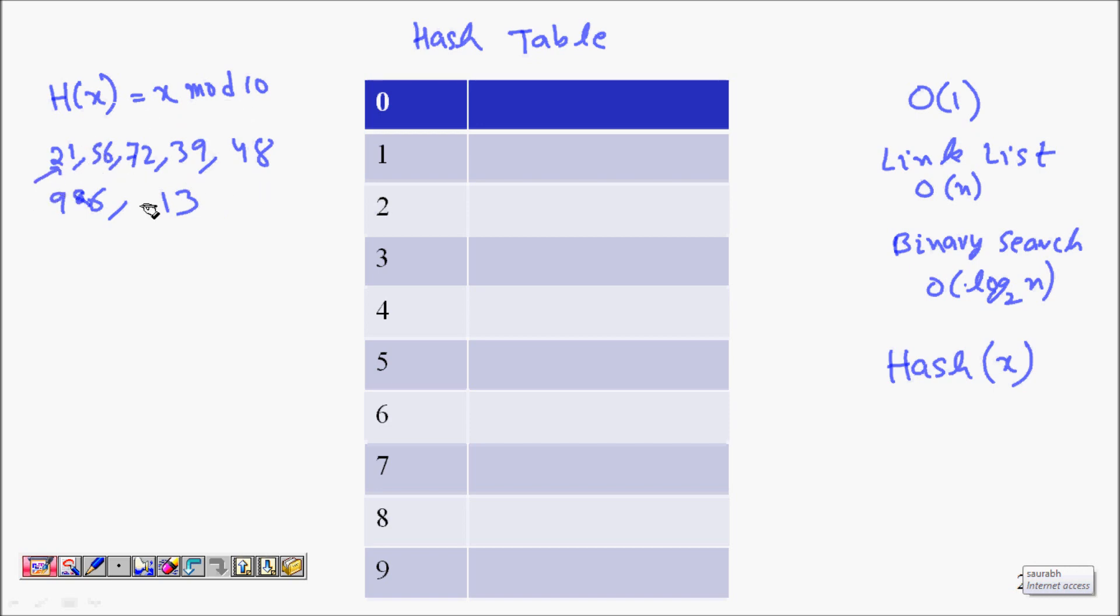Now what happens when we are inserting these elements? We will use hash function to decide where we should keep that value in the table. H(21) will be 21 mod 10 so it becomes 1, so we put it here. H(56) will be 56 modulo 10 so it will be 6. We will have 56 here.